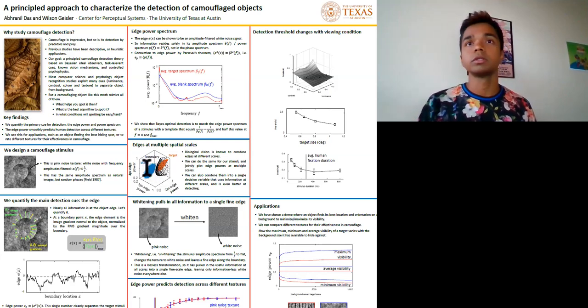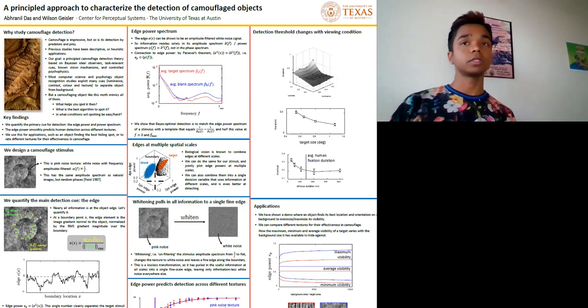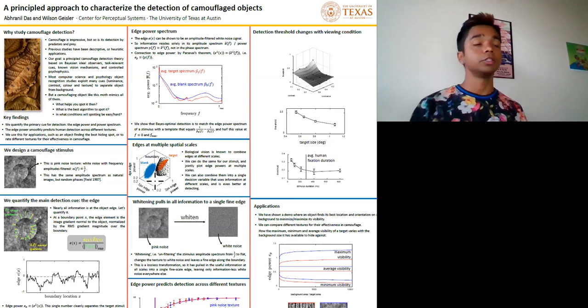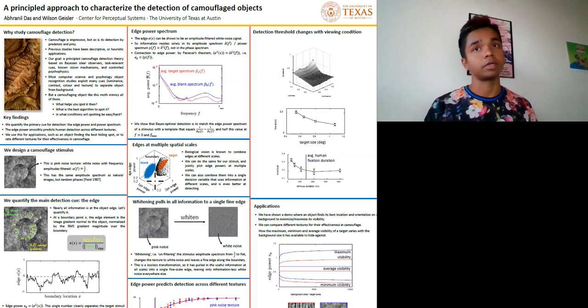Here's the joint distribution of the edge power at different scales. We can also combine them into a single decision variable that utilizes the information at different scales and is even better at detecting the camouflaged target.